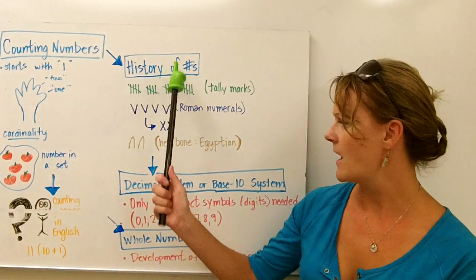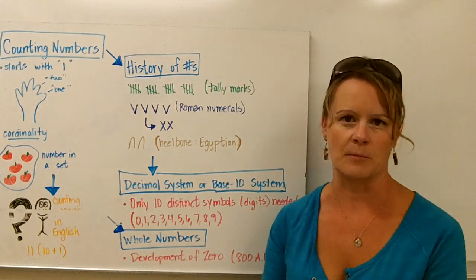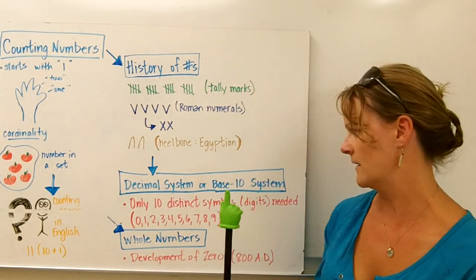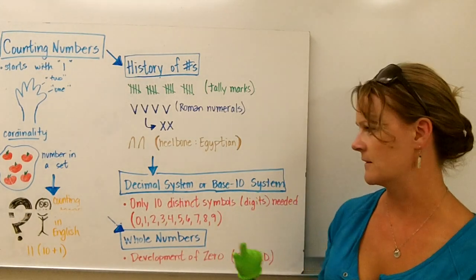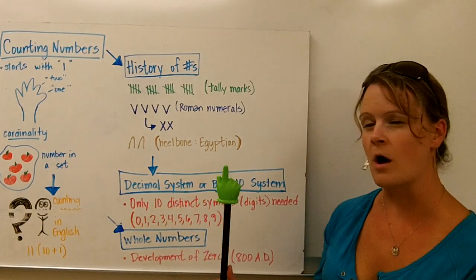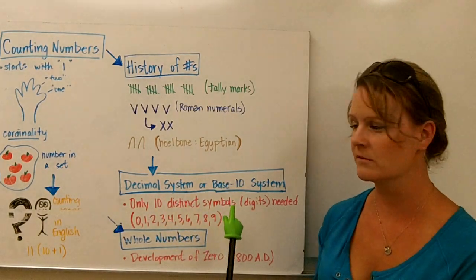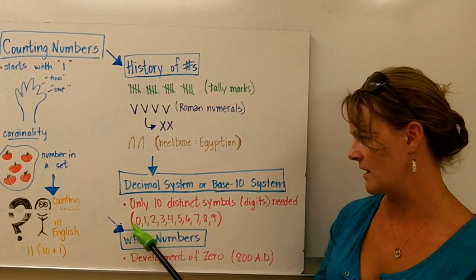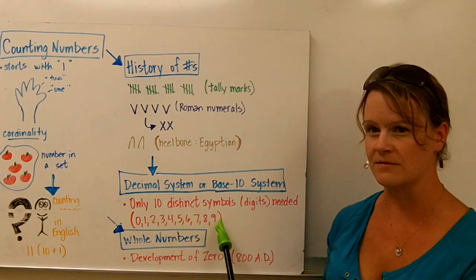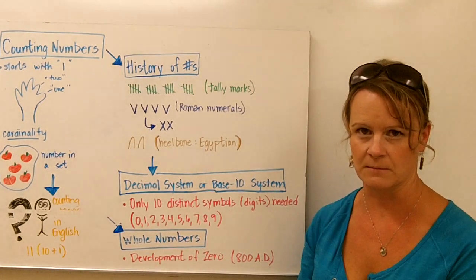So finally, the decimal system came around. And it really simplified things, also called the base ten system. According to this system, all we need are ten distinct symbols, or digits, right here: zero, one, two, three, four, five, six, seven, eight, nine. And that's all that's needed in the decimal system.